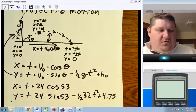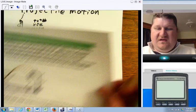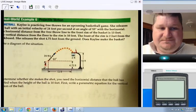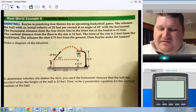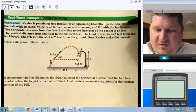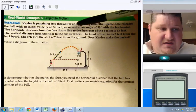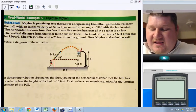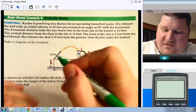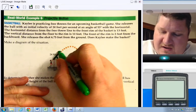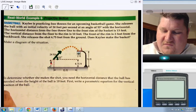Now, if I go and take a look at a problem such as this, this actually is an example from your book, and we have Kaylee's practicing free throws for an upcoming basketball game. She releases the ball with an initial velocity of 24 feet per second at an angle of 53 degrees. So we have our 53 degrees and our initial velocity 24 feet per second.